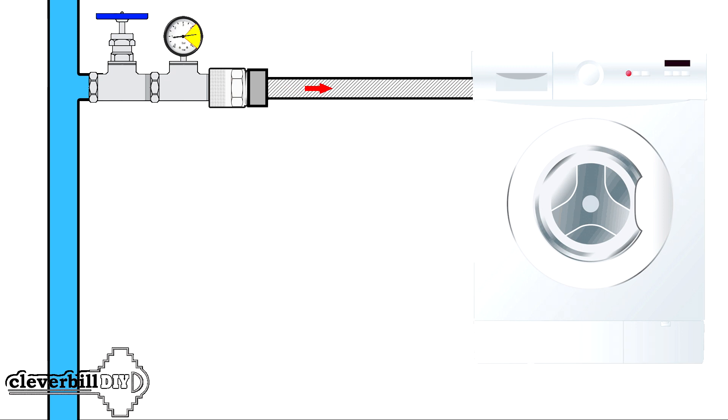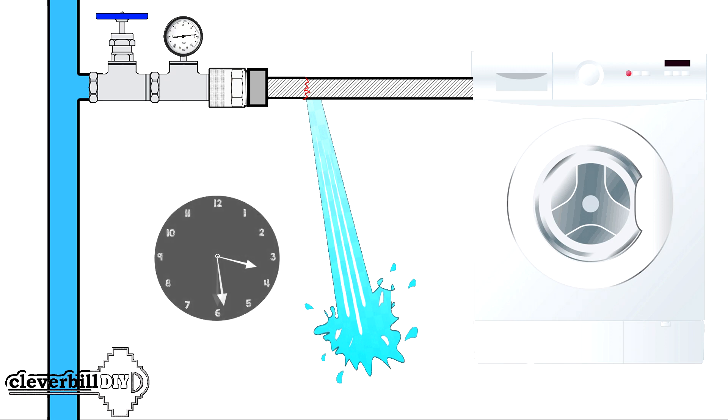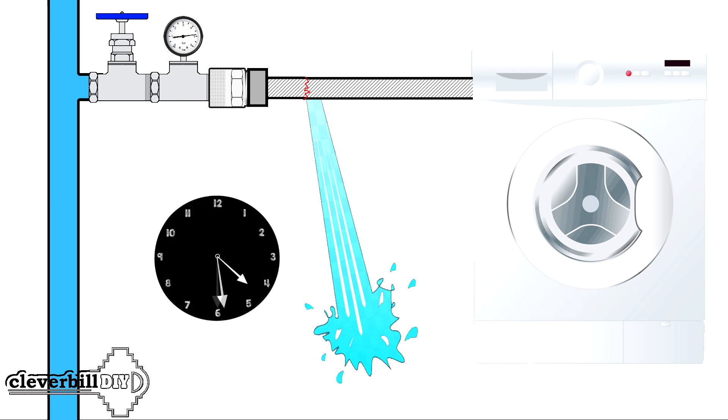The higher these indicators, the higher the chances of the device being triggered. The fact that the valve does not protect against partial destruction of the hose is most likely a fact. Water can flow through minor damage for days on end and this will not be reflected on the valve.